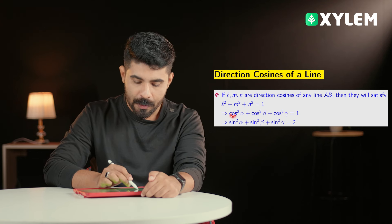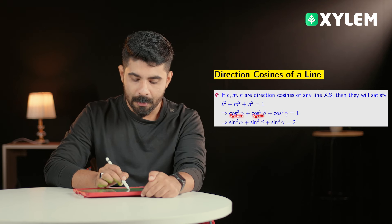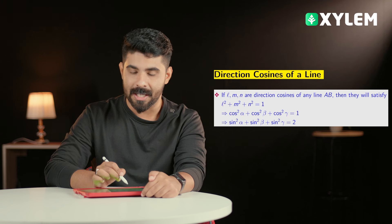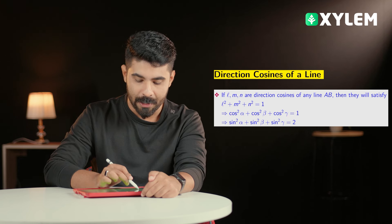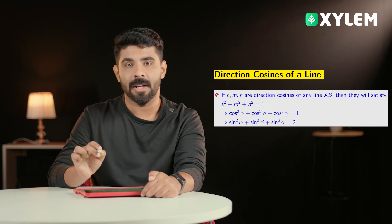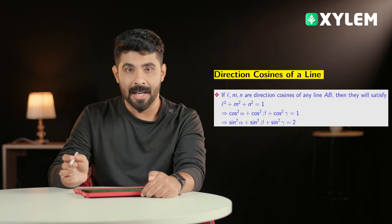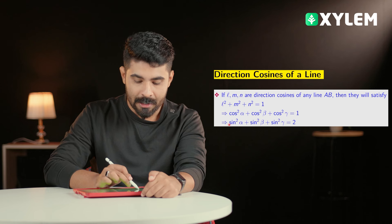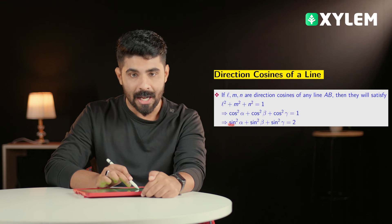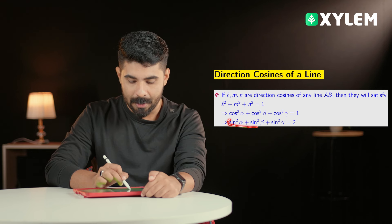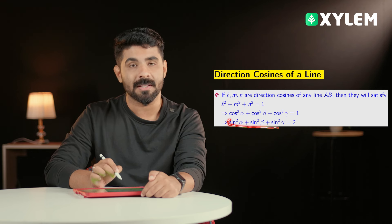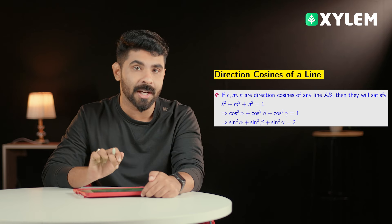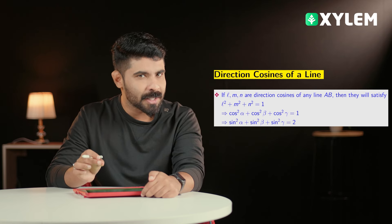From cos²α + cos²β + cos²γ = 1, using cos²α = 1 minus sin²α and adding all terms, we get sin²α + sin²β + sin²γ = 2. This is an important derived result.